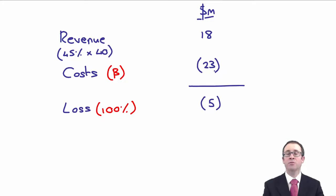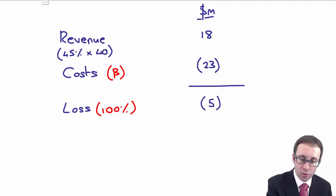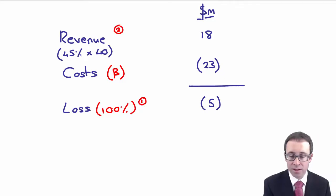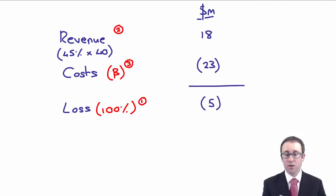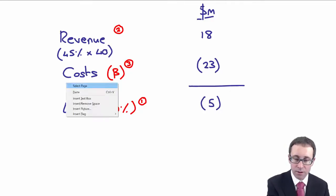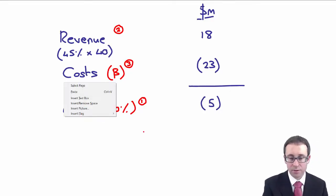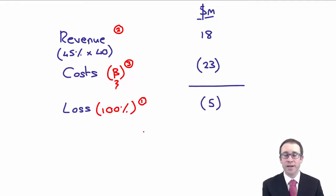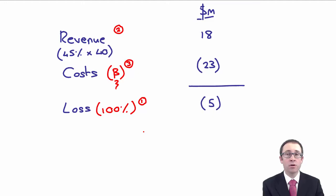The key bit there is: once you've worked out the loss, you first of all recognise the loss immediately — 100%. You put in the revenue based upon the percentage complete. And then the third thing that you do is look at the costs as a balancing figure. Hopefully you've found that example OK. It shouldn't be any more demanding than that within the exam. Maybe loss-making contracts are easier than profitable ones, but allow you to think about that in your own time.